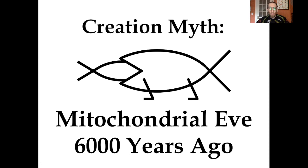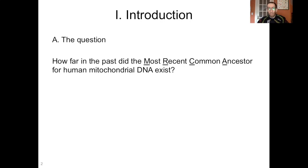Before we get into what creationists say about this and why it's wrong, we have to introduce the topic. The question we want to address today is: how far back in the past did the human most recent common ancestor for mitochondrial DNA exist? The mitochondria — that's the powerhouse of the cell — those little things that are always orange in the textbook drawings that make ATP. They have their own DNA because they were formed via endosymbiosis, and you only inherit the mitochondrial DNA from your mom because all the mitochondria that an embryo gets comes from the egg cell rather than the sperm.